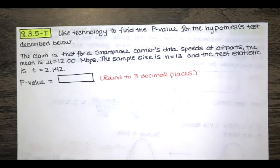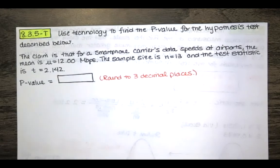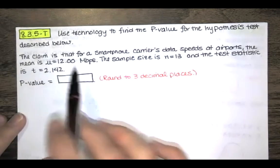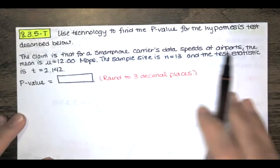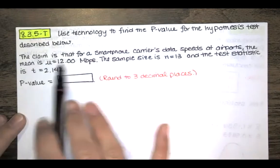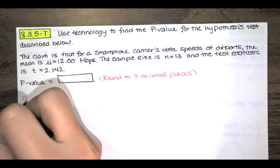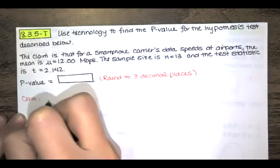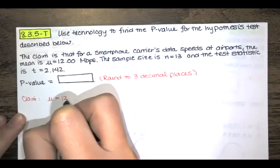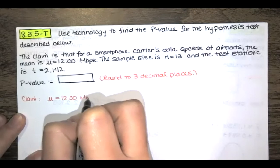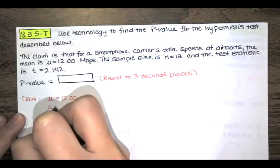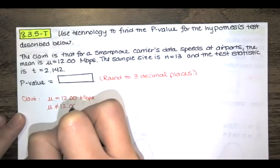So the first thing that I would do for this is just for any other hypothesis test I want to write down the claim and use the claim to infer both the null and alternative hypotheses. So it says the claim is that the mean is equal to this value. If that is not true then we would have this.